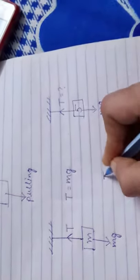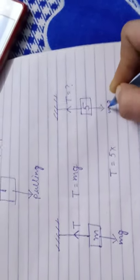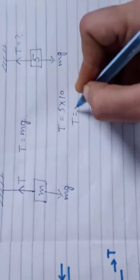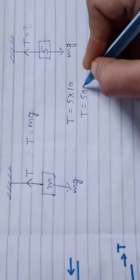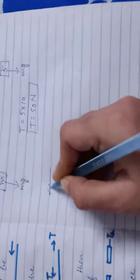So T is equal to m, which is 5, into g, which is 10. T is equal to 50. The unit of tension is newton, so T is equal to 50 newton.